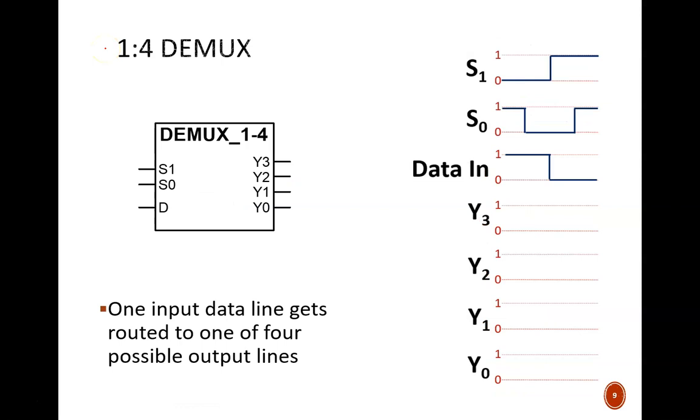Now we'll flip things around with a 1 to 4 demux. A demultiplexer has one data input line that gets routed to one of multiple possible output lines. The design that we discussed in earlier videos forces non-selected outputs to equal zero. With this in mind, try to complete the timing diagram.